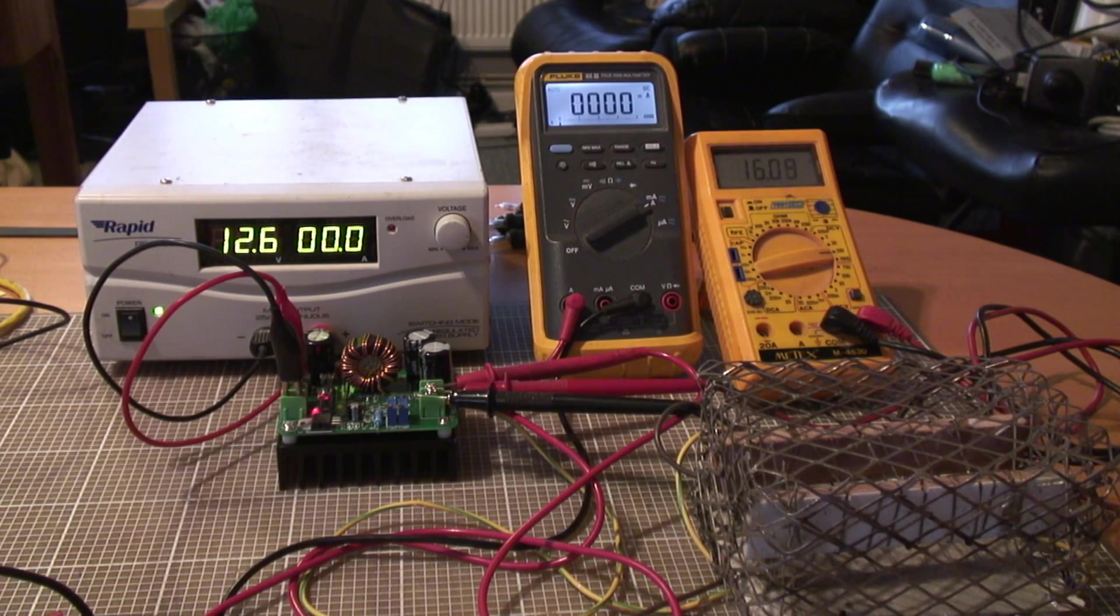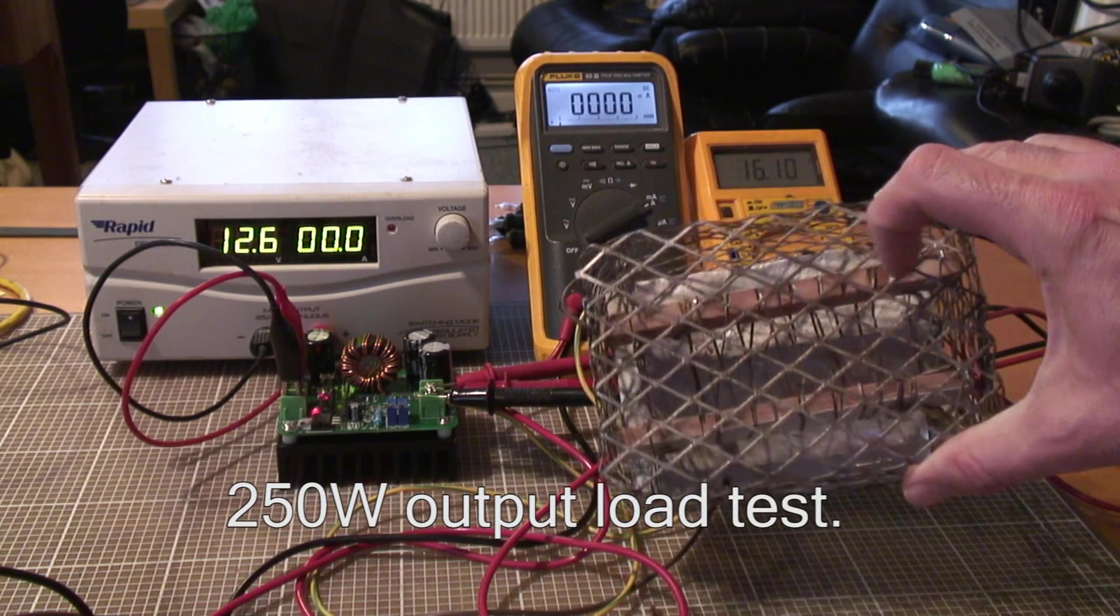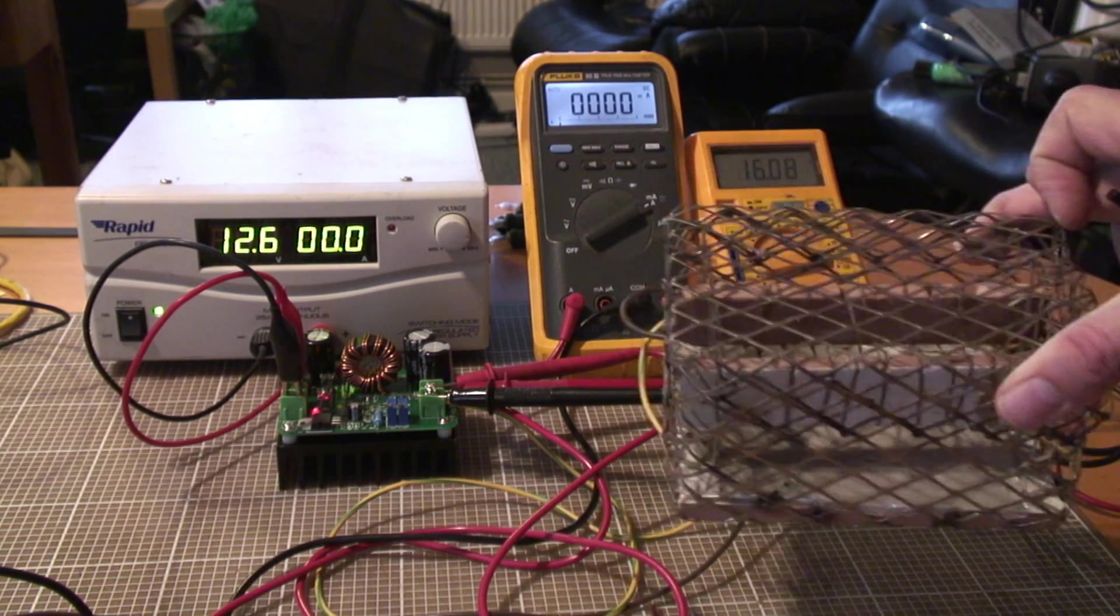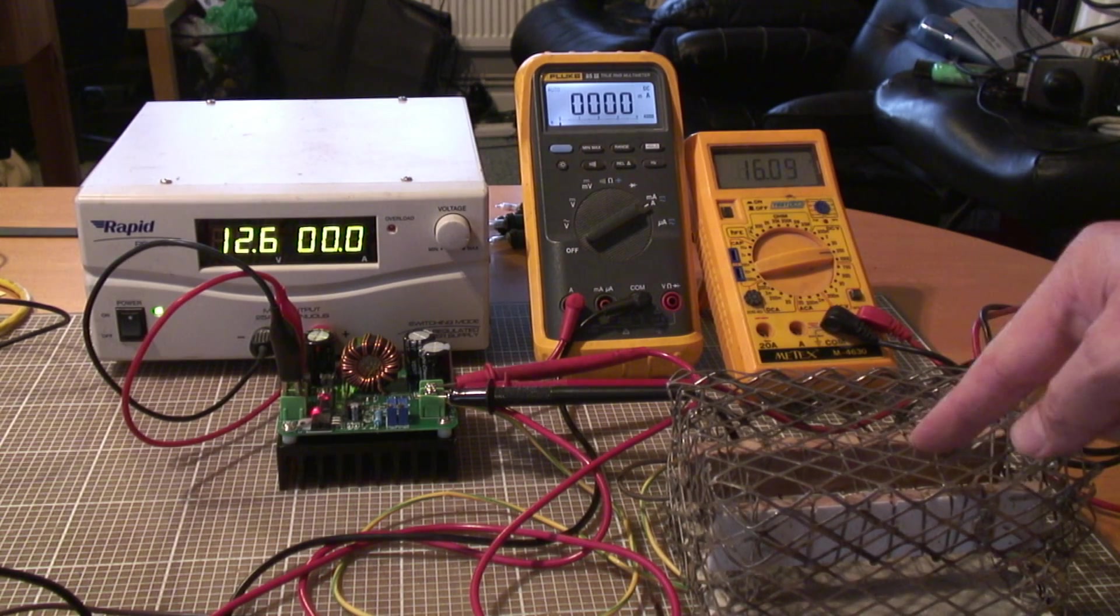So I'm going to try now with a heavier load attached. This is a bunch of toaster wire wrapped round two bits of ceramic tile. I use this as a dump load on a battery charger I've got that lets me run a discharge function. So it's basically a 2 ohm load.